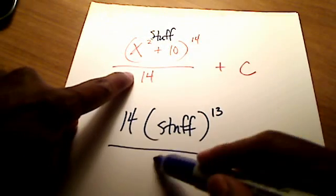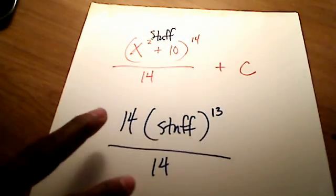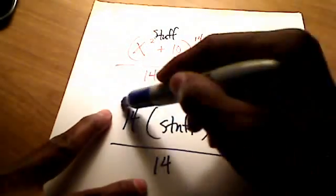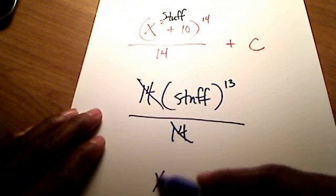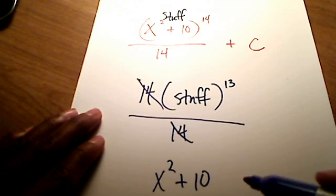Don't forget, there's still a 14 in the denominator, so what happens to these two 14's? They cross each other out. But wait, what was that stuff that we had? Oh, that stuff was actually an x squared plus 10. That's what it really was, right?